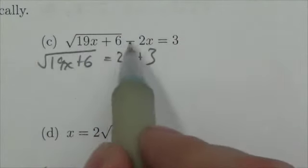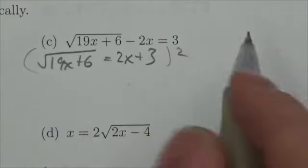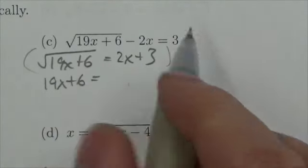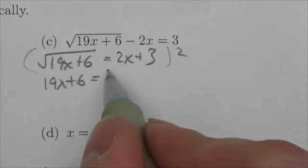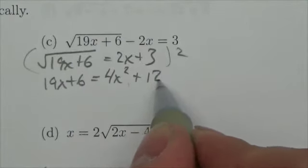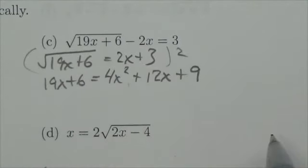So take that negative 2x over to the other side and now I'll square both sides and I'll get 19x plus 6 equals, when I square that binomial here, that'll be 4x squared, plus 6x plus 6x, so 12x plus 9.